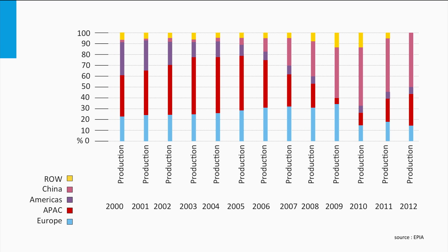Now looking at the supply side: the Asia-Pacific share on the market was increasing, and up to 2006 the European share was increasing slowly. From 2008 we see a big surge of production in China, made possible by a huge investment of the Chinese government into scaling up PV module manufacturing. In 2012, around 60% of all PV modules were produced in China.